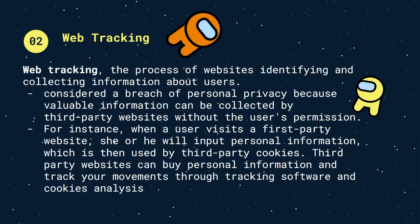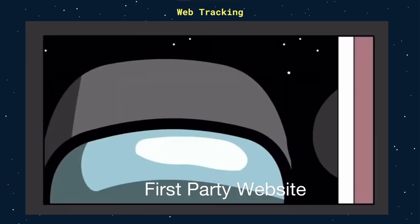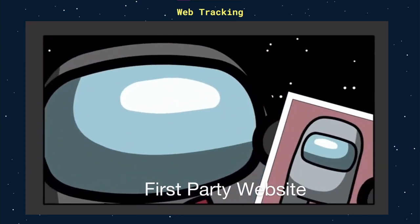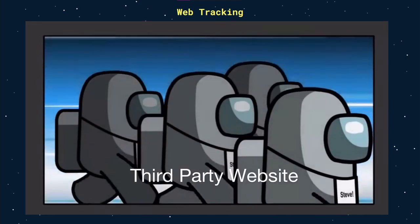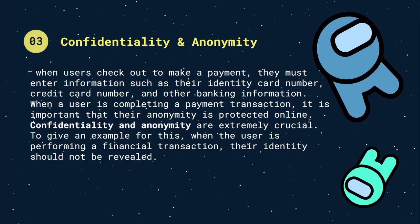When a user visits a first-party website and inputs personal information, that data can then be used by third-party cookies. Third-party websites can buy personal information and track user movements through tracking software and cookie analysis. Lastly, keeping information confidential is important — especially when users check out to make a payment, they are required to input their identity card number, credit card number, and other banking information. It is important that their anonymity is protected online during payment transactions.